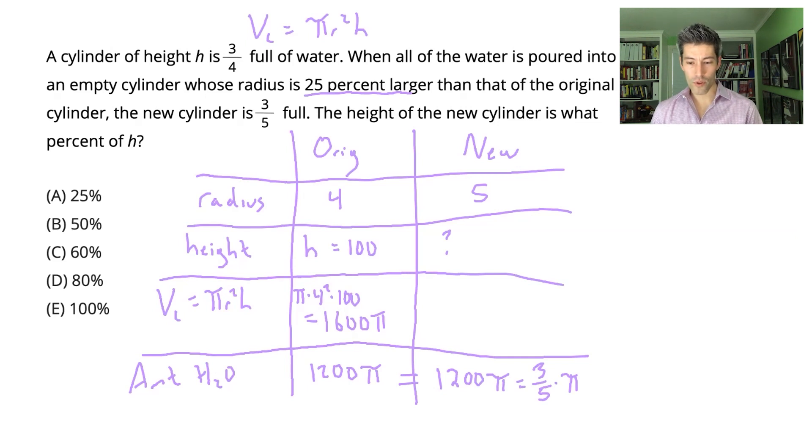Well, the radius of the new cylinder is 5, so that'll be 5². And eventually I need to figure out what the height of this new cylinder is, so I'll just keep this question mark. That's what I'm looking for.